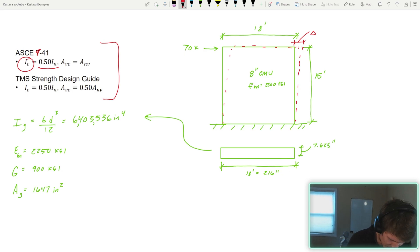And they suggest your I effective for in-plane analysis should be taken as 0.5 I sub N. I sub N in this case is your gross moment of inertia. Your cross-sectional area AVE, so your cross-sectional area for your shear stiffness, should just be equal to AN, so AN in my variables is just AG, your gross cross-sectional area. So there's no change in that cross-section when running the analysis based on the ASCE 41.